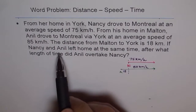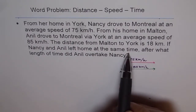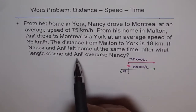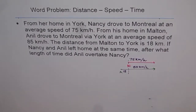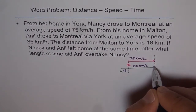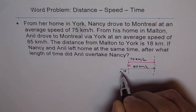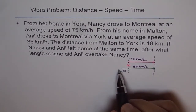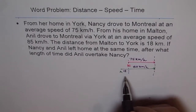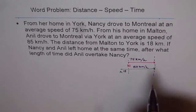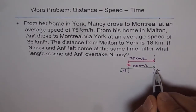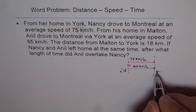If Nancy and Anil left home at the same time, after what length of time did Anil overtake Nancy? Let's say this is the point when Anil overtakes Nancy. As you can see, they left at the same time, so at the moment Anil overtakes Nancy, they must have traveled for the same duration of time.